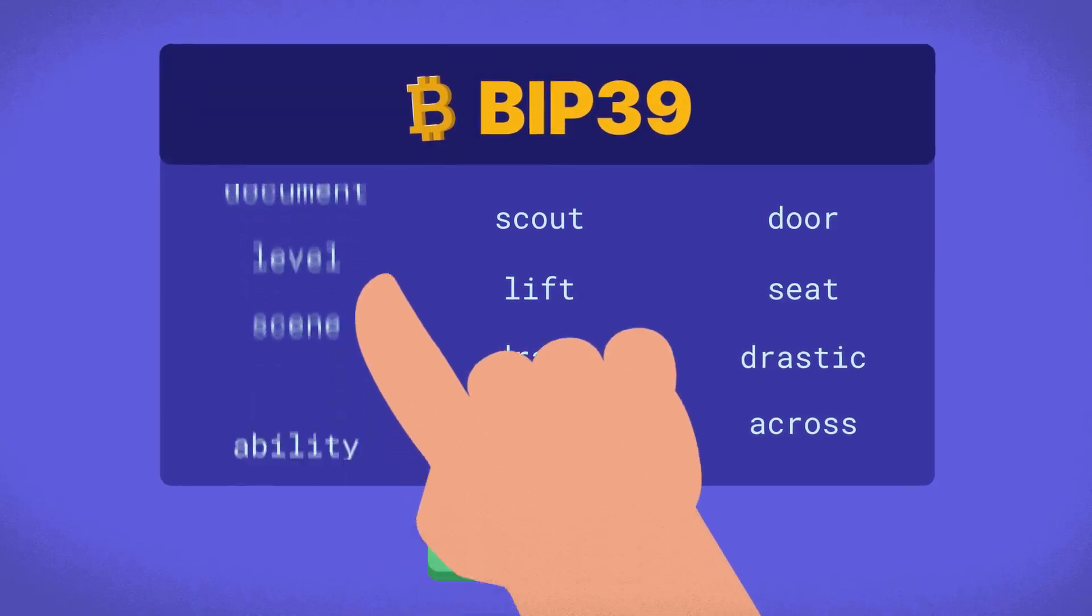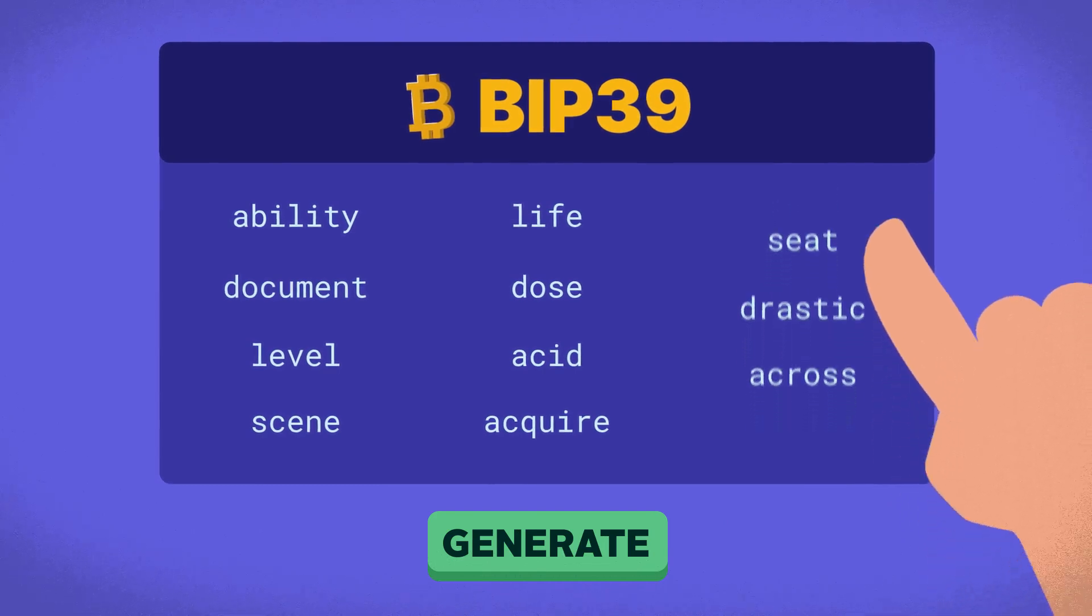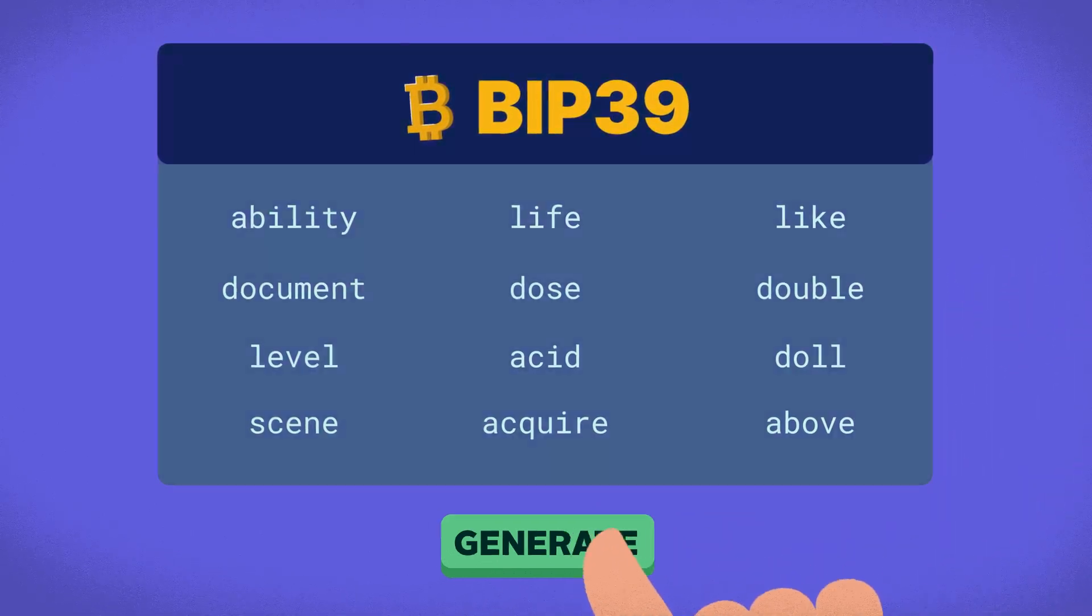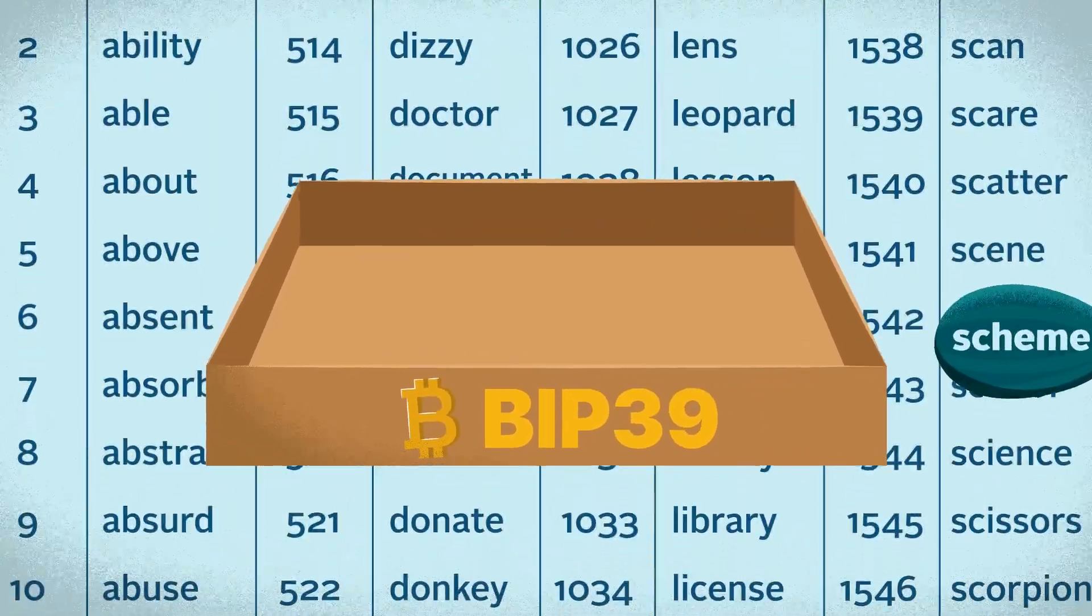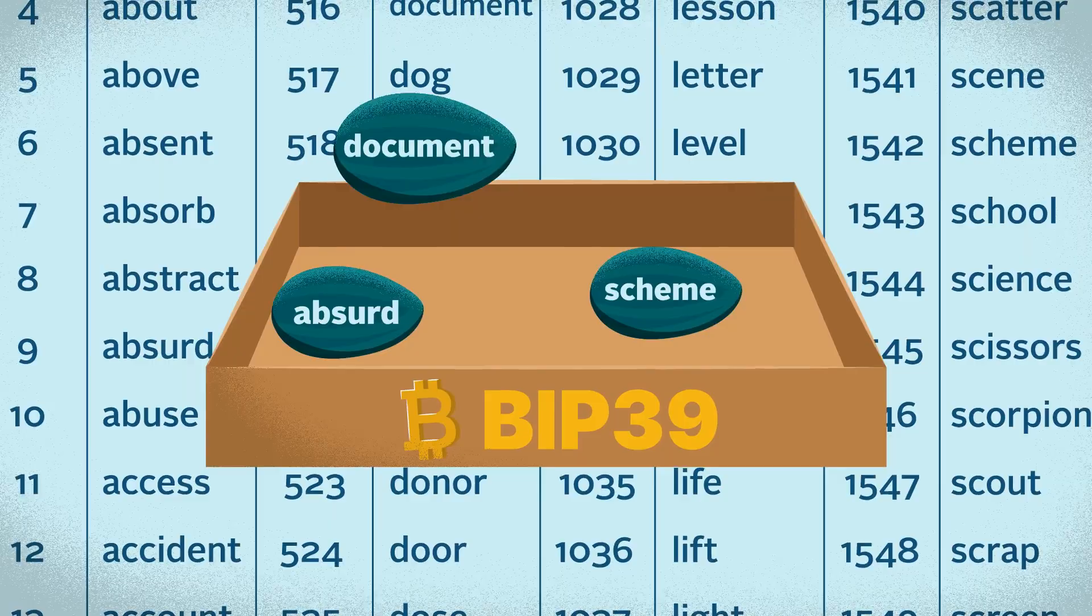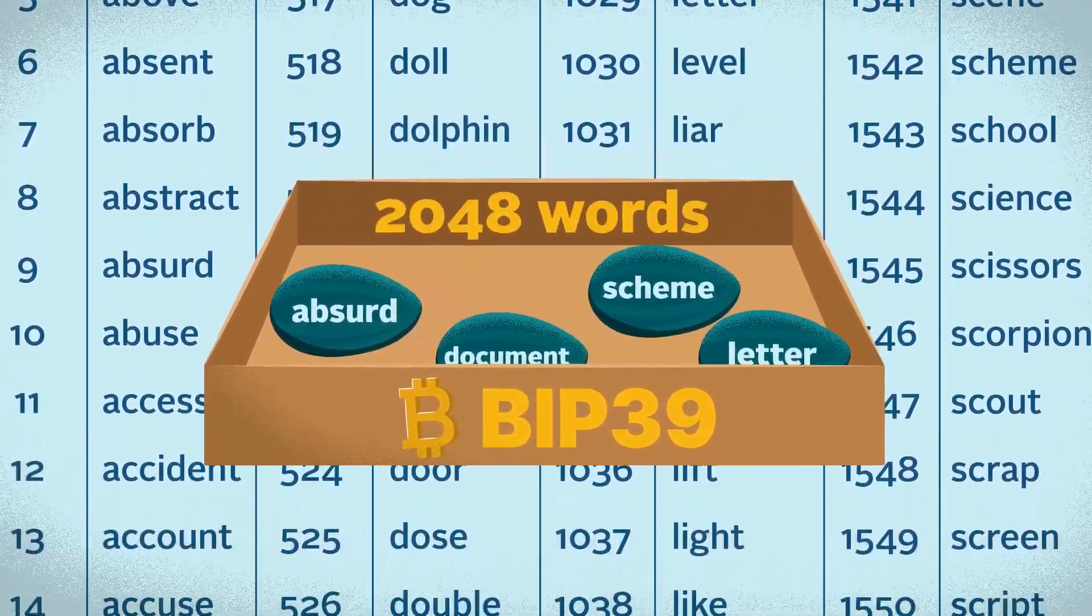To refresh your memory, seed phrases are based on the BIP39 standard originally proposed for the Bitcoin network in 2013. BIP39 enabled wallet recovery via seed phrases, which are composed of words randomly selected from a defined list of 2048 words.